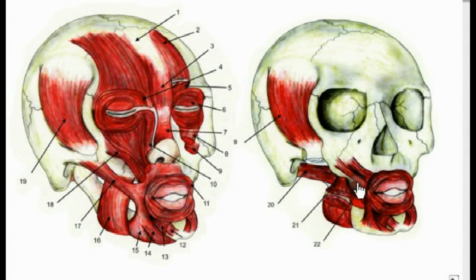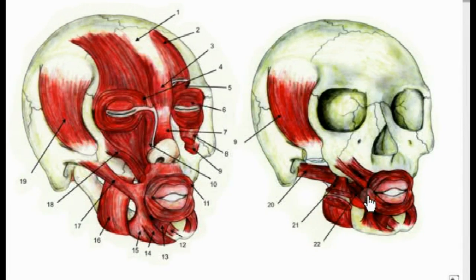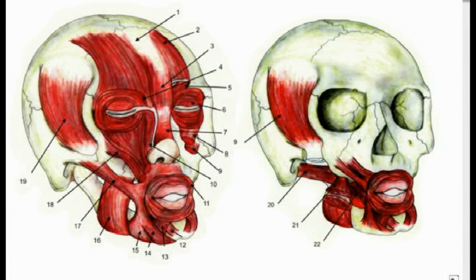The next muscle of the face is the buccinator, labeled here as number 22. It originates on the posterior alveolar processes of the maxilla and mandible and inserts on orbicularis oris. Its action is compressing the cheek, like in blowing or sucking air in.